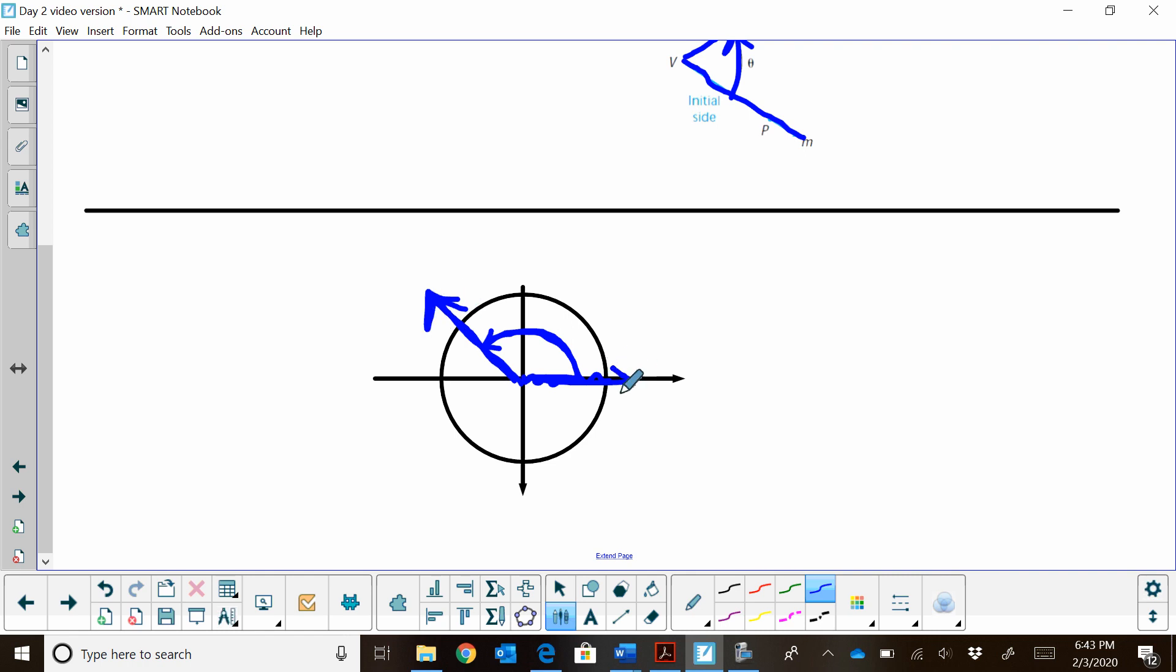Now, I like to think of this kind of like hands on a clock. So this hand stays constant and still on the x-axis, and the other hand rotates to the angle.